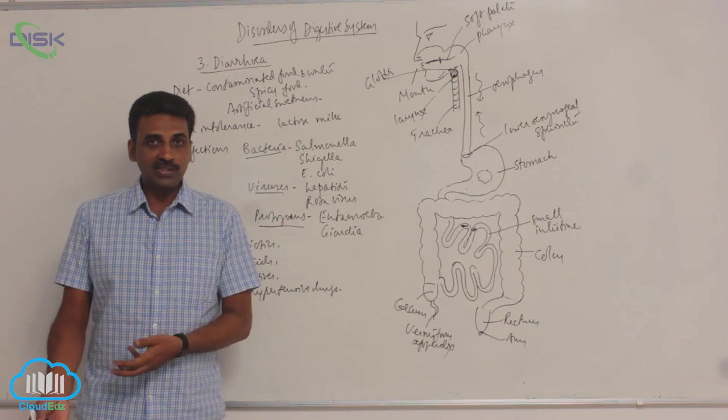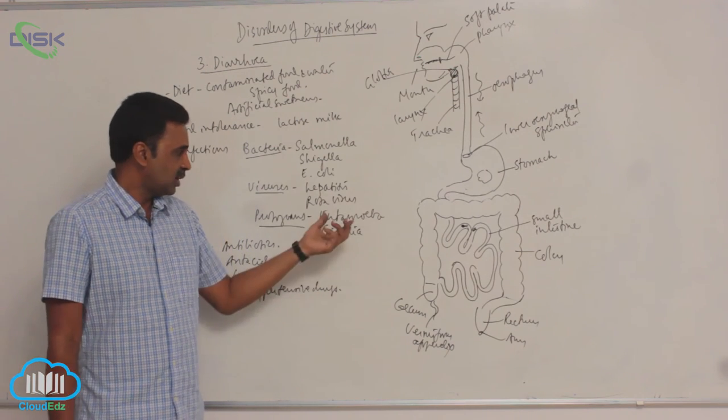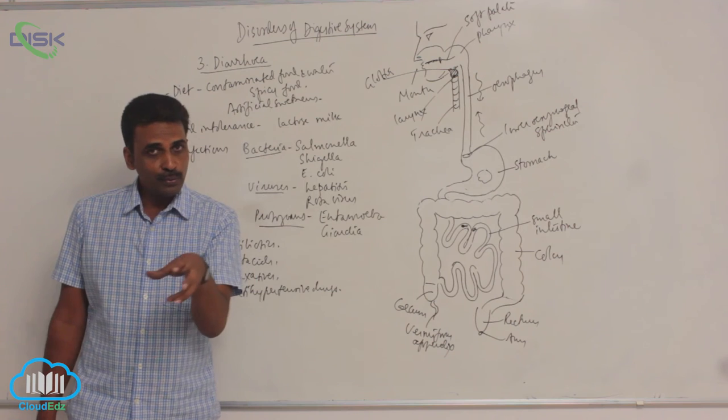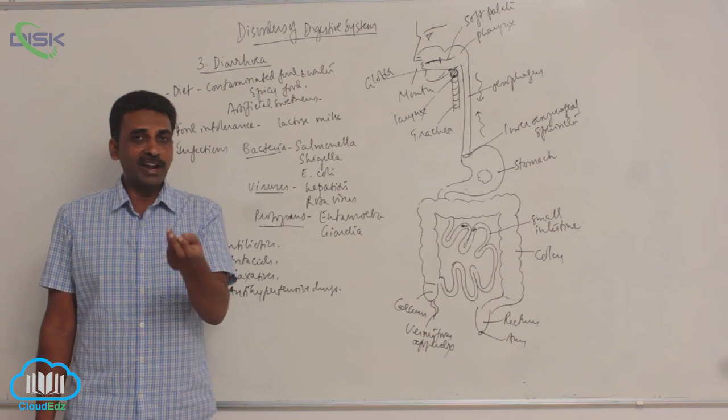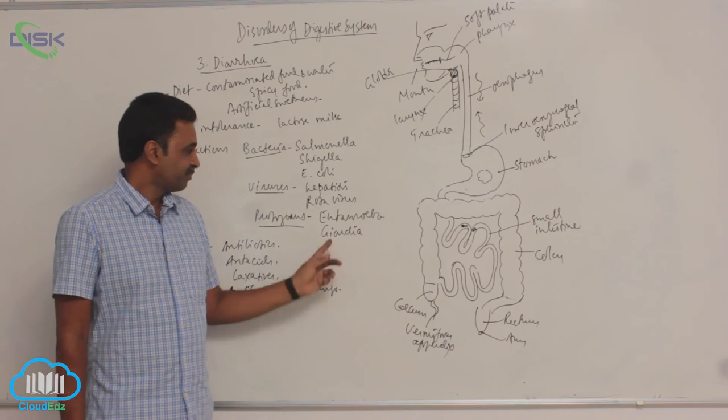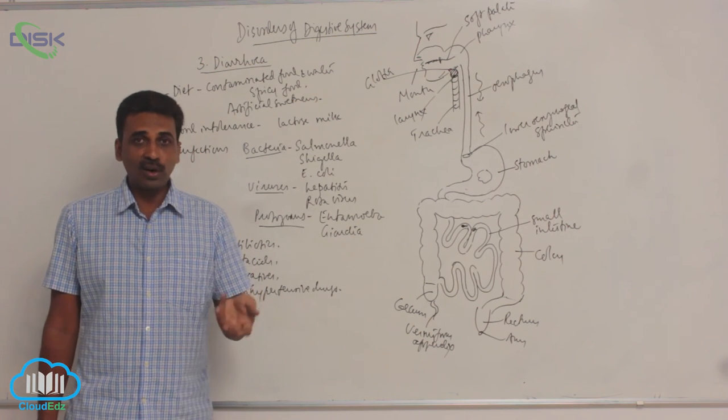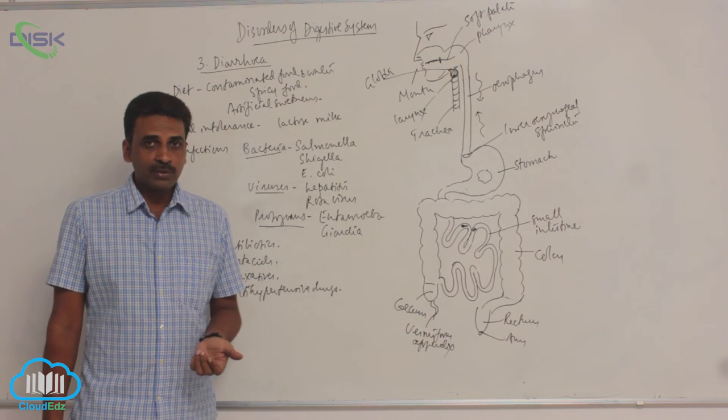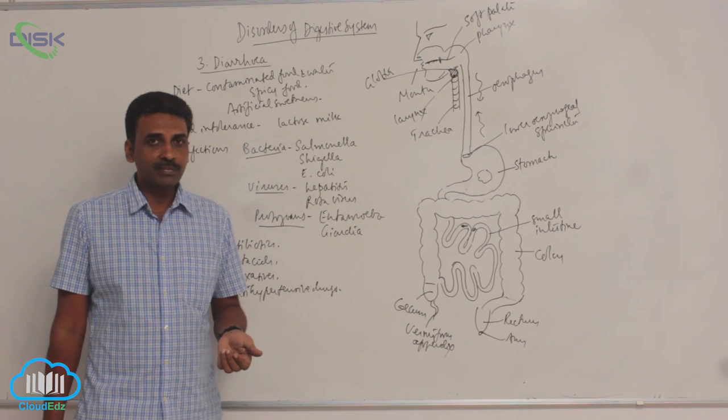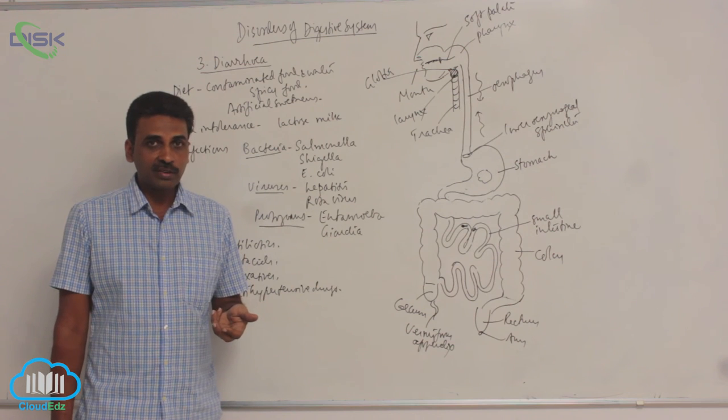And rotavirus, two viruses which might cause, rotavirus which affects the infants, the kids, and causes severe diarrhea. And the protozoans include Entamoeba. Of course there you call it as amebiosis or amoebic dysentery. There it is dysentery, it's not diarrhea actually, where there is profuse loose motion it is diarrhea. Where there is little bit of blood and mucus, it is dysentery. And Giardia, Giardia intestinalis, also called Lamblia intestinalis, is the protozoan parasite. It is called grand old man of intestine, so it causes diarrhea.